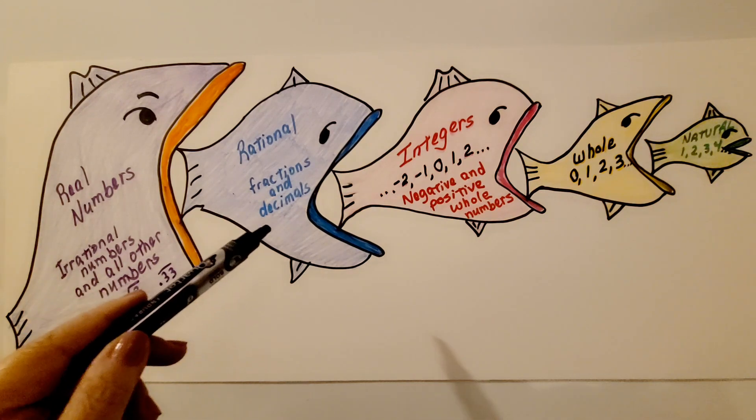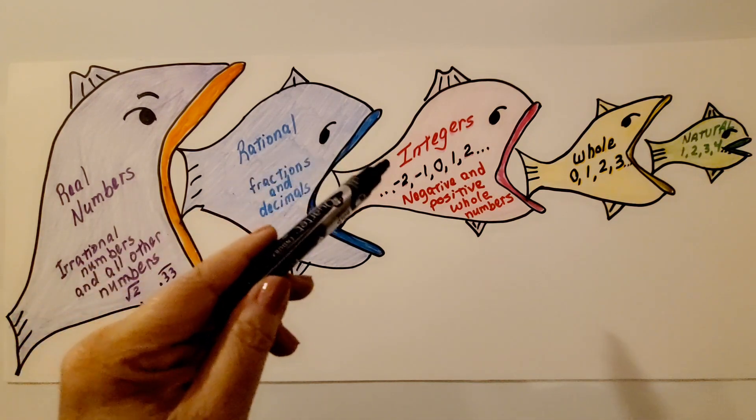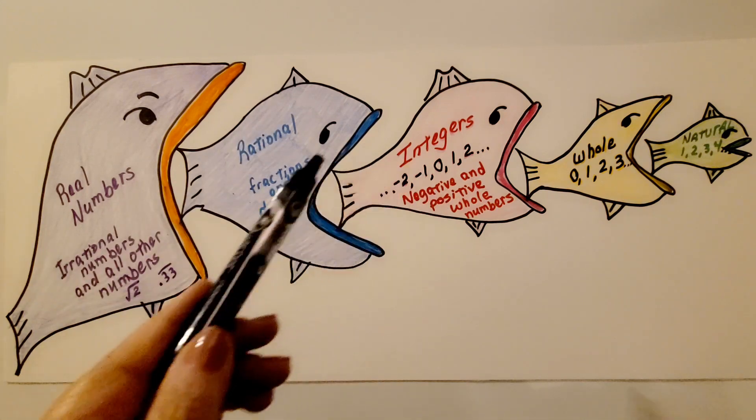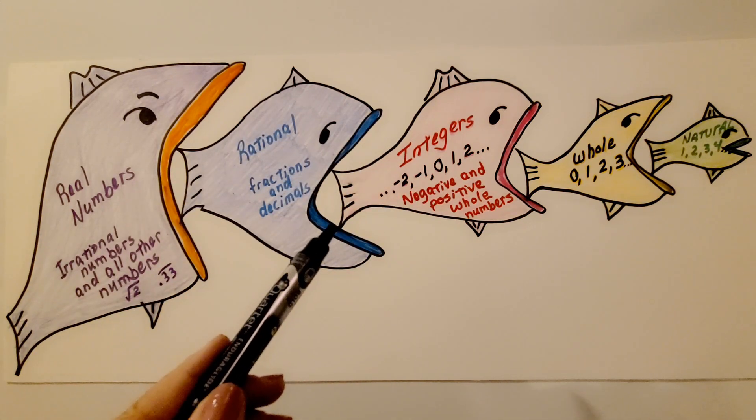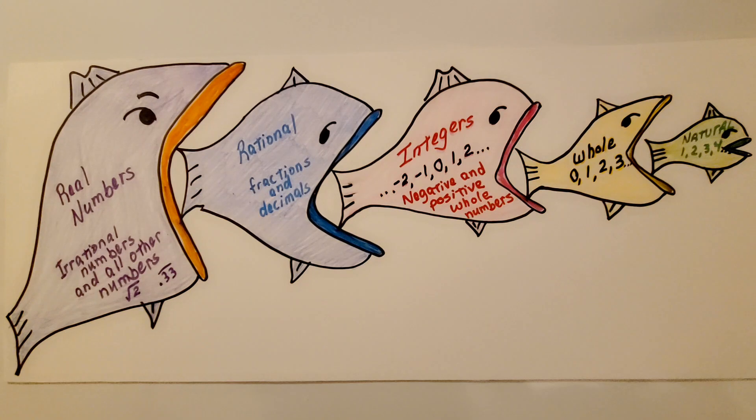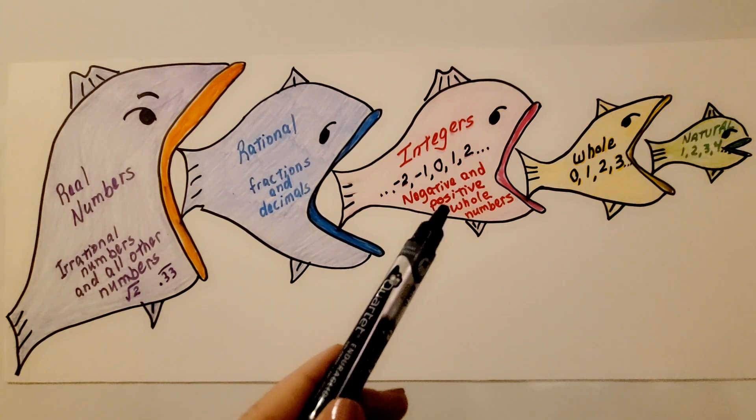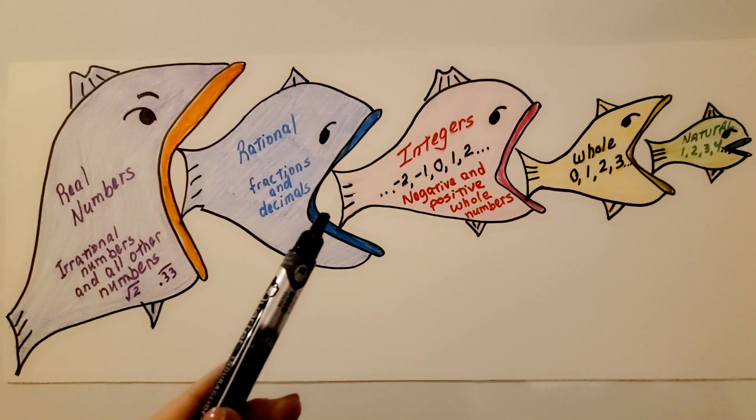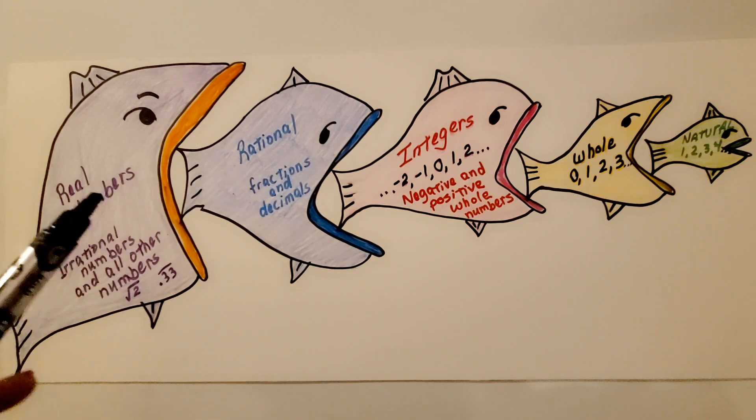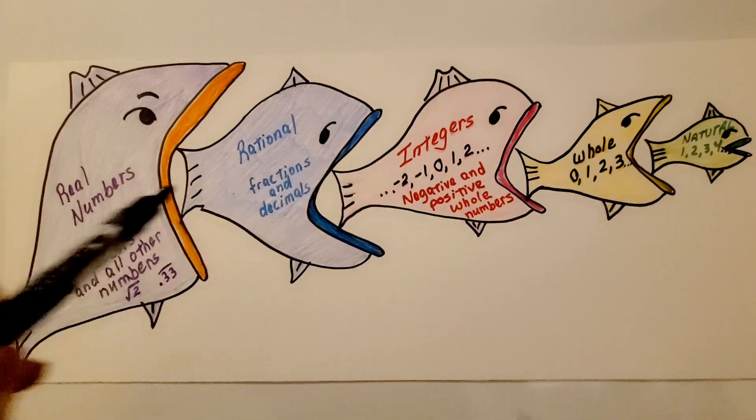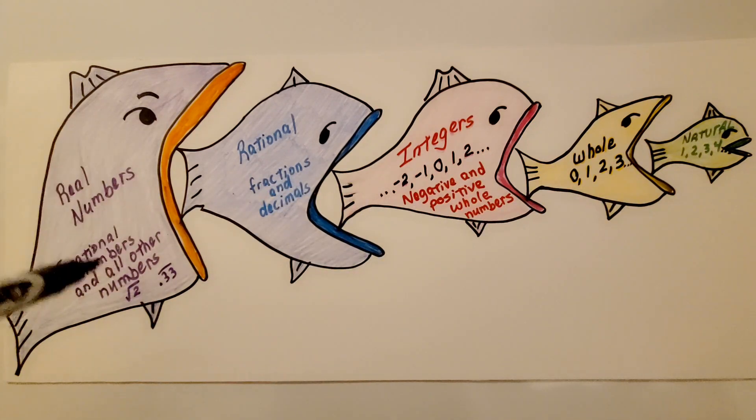Rational numbers are fractions and decimals, so they include integers. Integers are a subset of rational numbers. And so they can be written as a quotient of two integers. Rational numbers can. And real numbers are irrational numbers and all of these other ones in that one big fish, it includes all of these. Maybe you can take a screenshot of my fish to help you remember.